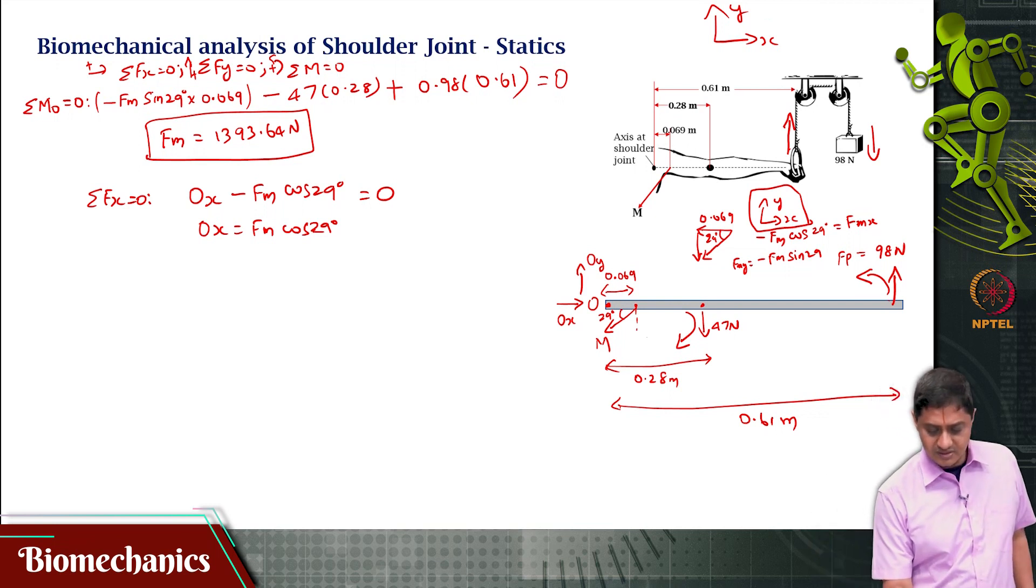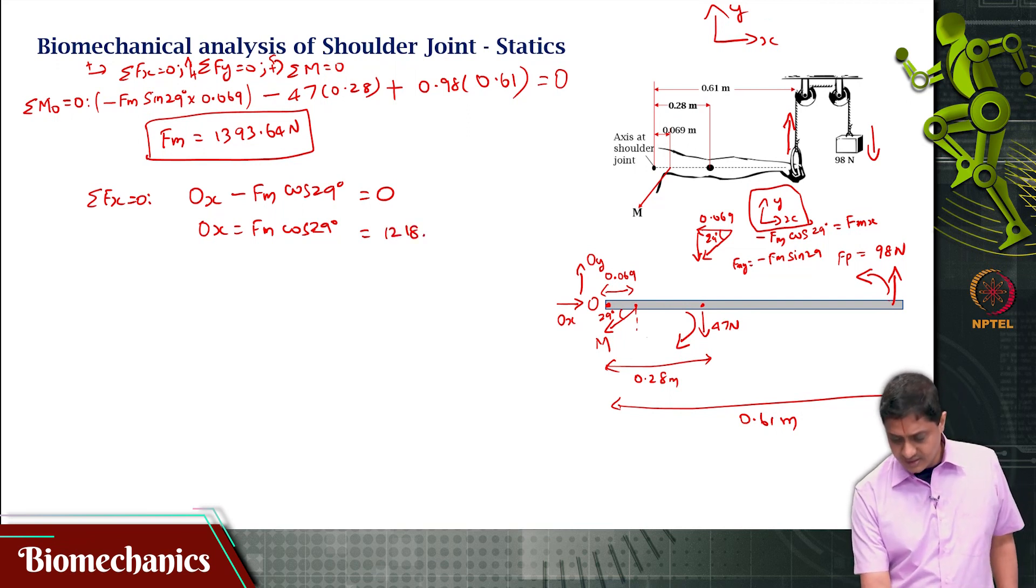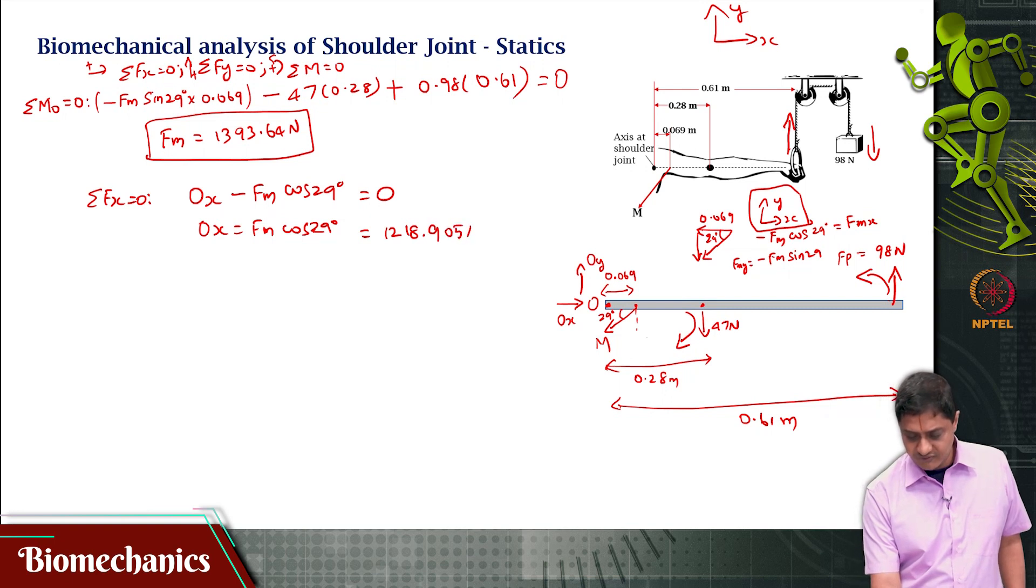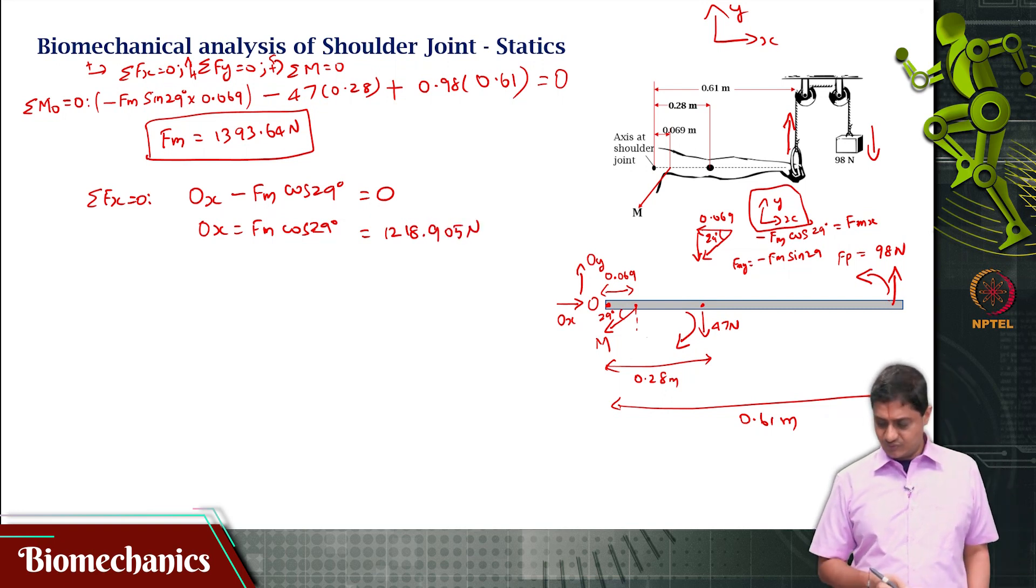That means that OX is Fm cos 29 and we know Fm to be 1393.64 newtons. So, if you do that, you get the value of OX as 1218.91 newtons. This is the value of OX.